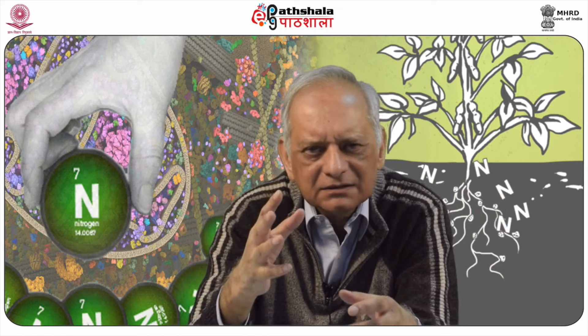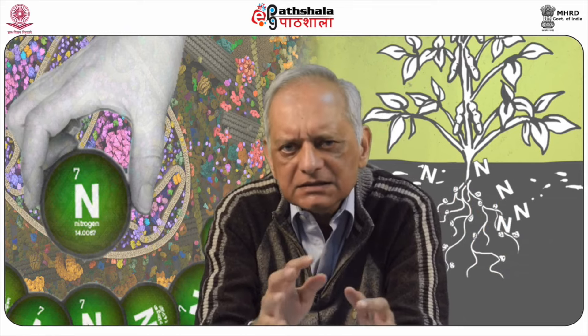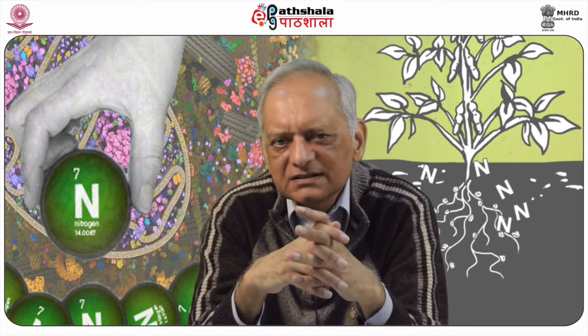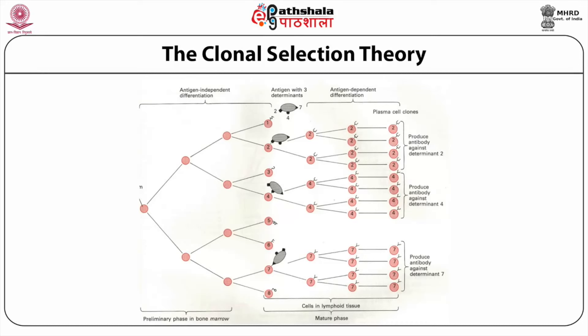It is not correct to pit Jerne's network theory against clonal selection theory — doing that is simplistic and creates confusion. The existence of Jerne's network continues to find evidence, and the network idea is not necessarily incompatible with clonal selection theory. Lymphocytes are continuously made by the body, and these lymphocytes have IgM as receptors with different specificities present on B cell surfaces; their production takes place in the bone marrow.